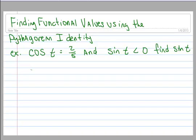All right, here's an example. We're going to find functional values using the Pythagorean identity.